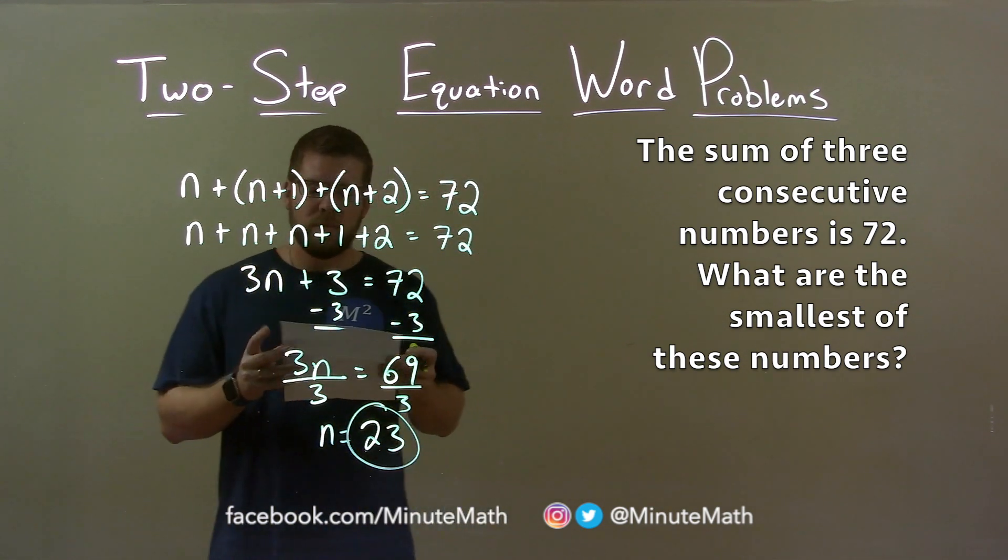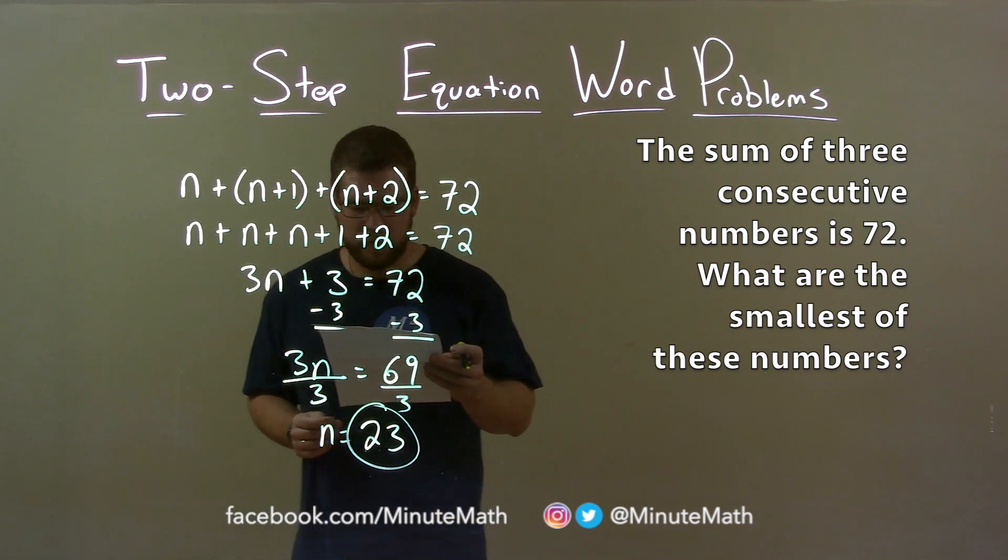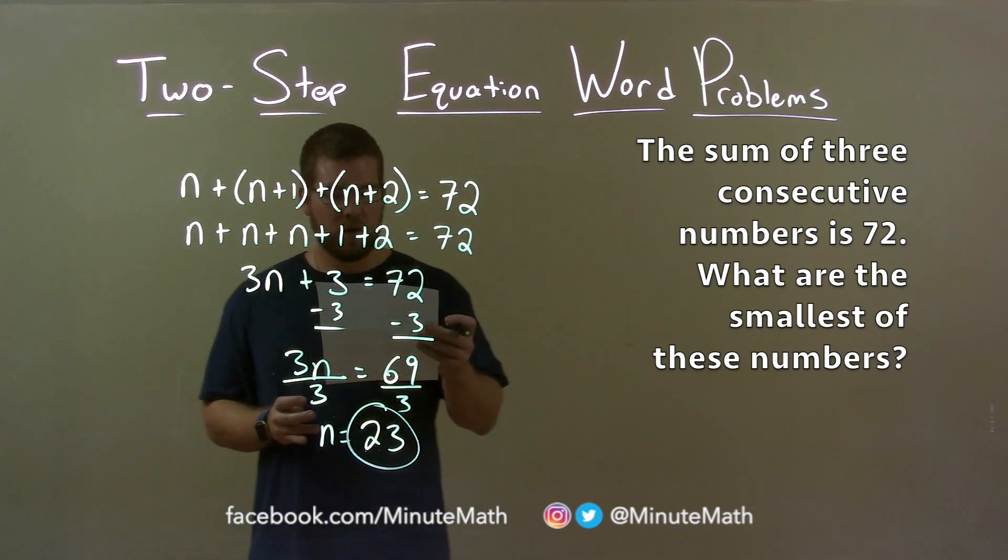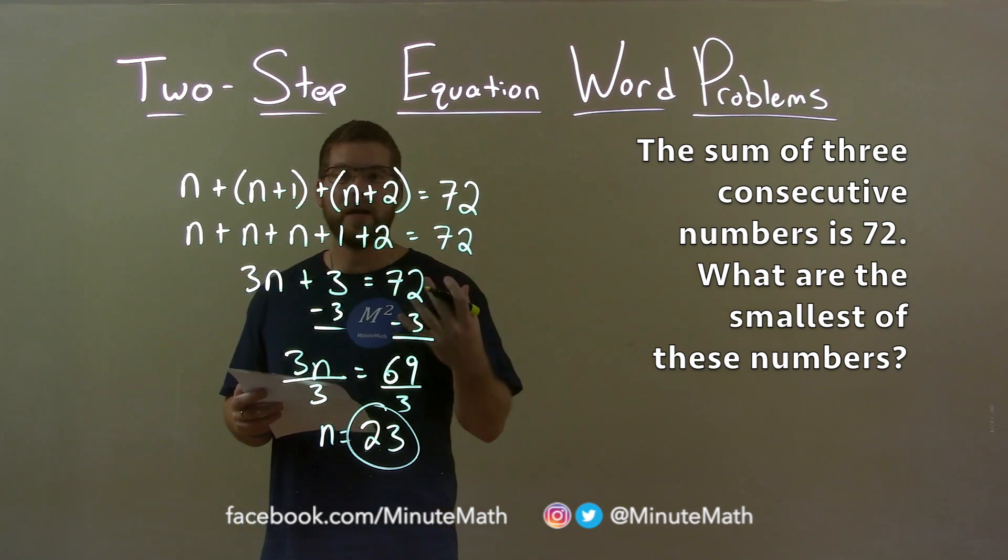Quick recap. We're given the word problem: the sum of three consecutive numbers is 72. What are the smallest of these numbers? What I did is create an equation.